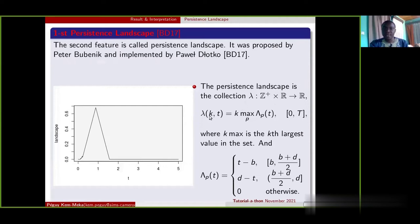Persistent landscape is just the collection of a function lambda defined as follows: lambda kt equals k max of p of lambda pt, where k max is the k largest value, and lambda of pt is given with this mathematical formula. Let us remind that this persistent landscape was first proposed by Peter Bubenik and implemented by Pawel Dlotko.